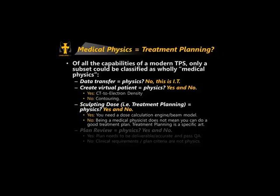Treatment planning is really a specific art. I've been to centers in Canada where one site has a team of 14 medical physicists who do all the IMRT planning. But it's very different depending on where you go. In the United States, treatment planning is primarily done by dosimetrists. Sometimes dosimetrists want the medical physicists as far away as possible from the treatment planning system because it's not the physicist's specific art.